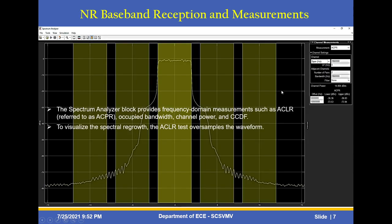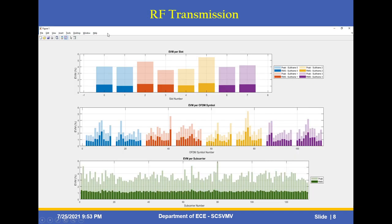This is the measurement output of the NR baseband reception and measurements block — the channel measurement. The channel settings show a span of 3960 frequency, two adjacent channel bands, and bandwidth containing 99% of the signal power. The ACPR measurement is shown here. The spectrum analyzer block provides frequency domain measurements such as ACLR, occupied bandwidth, channel power, and CCDF. To visualize spectral regrowth, the ACLR test oversamples the waveform. The output waveforms show EVM per slot, EVM per OFDM symbol, and EVM per subcarrier.